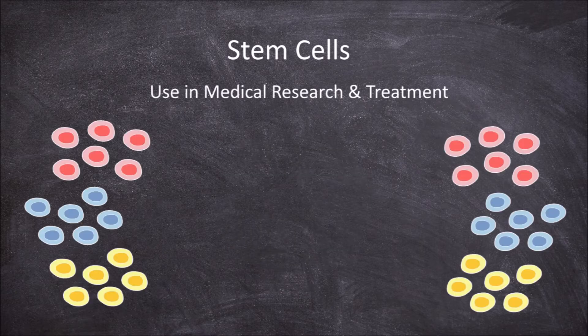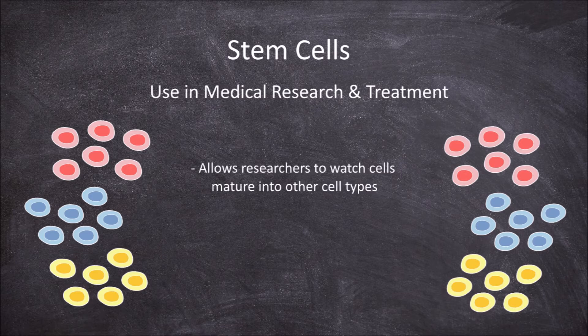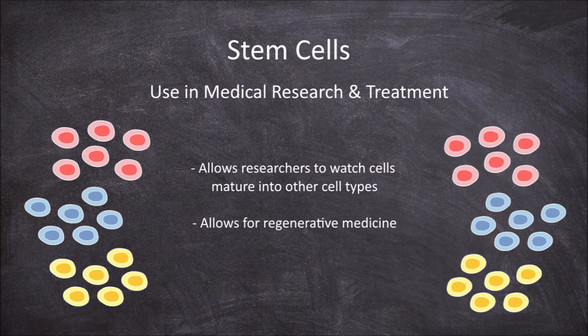Stem cells are used in medical research and treatment because of their ability to divide and differentiate into different cell types. They allow researchers to watch the stem cells mature into other cell types, which helps increase understanding of how diseases occur. They also allow for regenerative medicine, as they generate new healthy cells that can be used to replace diseased cells. They are also used to test new drugs, testing whether they are safe and/or effective on desired cells by testing them on specific cells generated from stem cells.